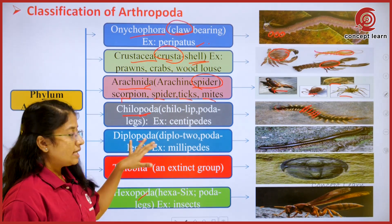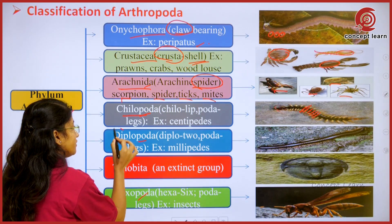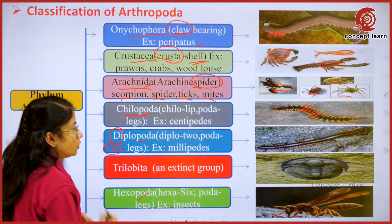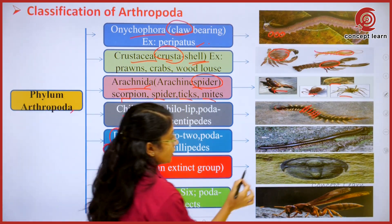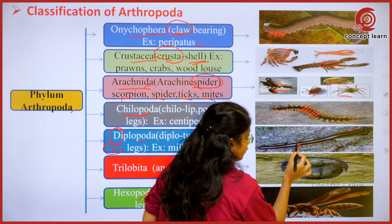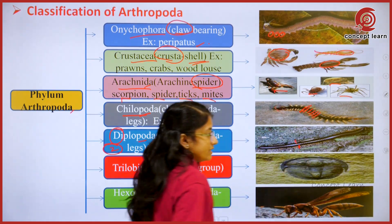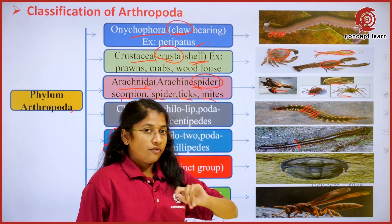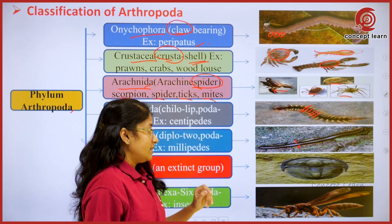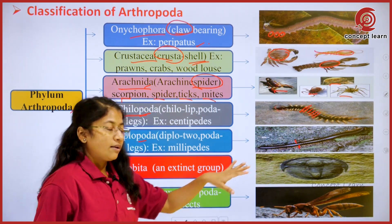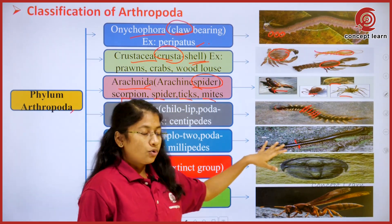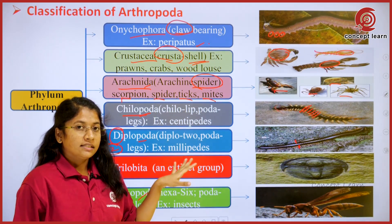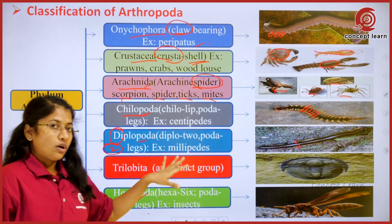Within the Chilopoda, that is the centipedes, there is one pair of legs per each segment. But if you see Diplopoda, the name itself represents 'di,' meaning two — here you can see two pairs of legs per each segment. In Chilopoda there is only one pair of legs per segment.